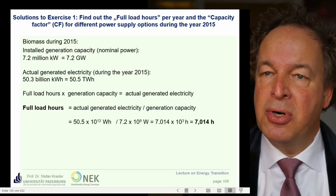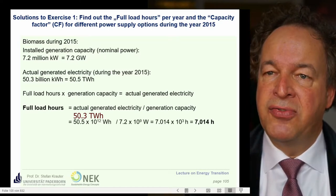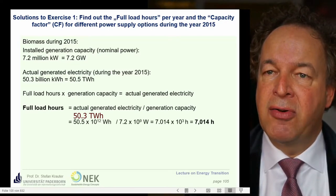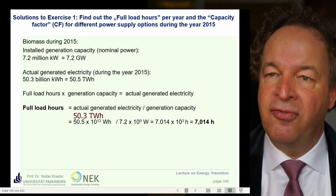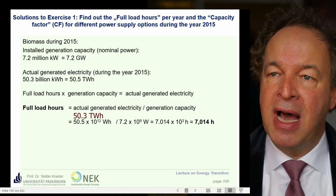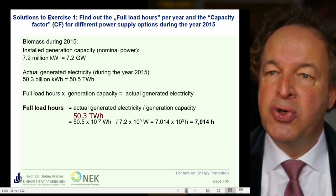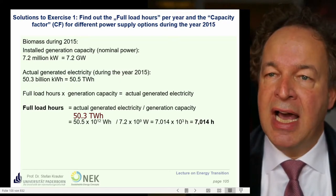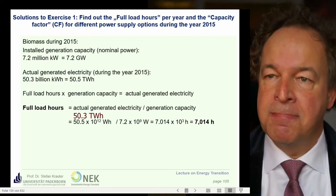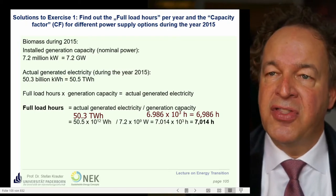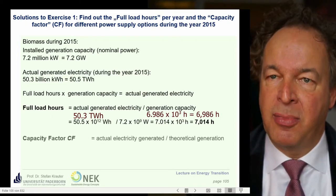Let's put in the numbers. We have 50.5 terawatt hours, equivalent to 50.5 times 10 to the power of 12 watt hours, divided by the generation capacity of 7.2 gigawatts, equivalent to 7.2 times 10 to the power of 9 watts. That gives us 7,014 hours — the number of full load hours.